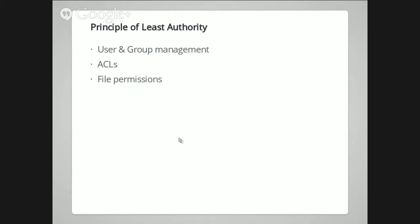ACLs are access control lists. We talked about them briefly in the lesson on files. An ACL adds more detail to user and group management — it says these people can do exactly these things on these files. That gives you finer-grained control, although they can be difficult to keep up to date if your users, UIDs, and group IDs are changing frequently. Go back and review your file permissions: does this really need to be world executable, or can it just be group executable if the person who needs to execute it is in the right group?